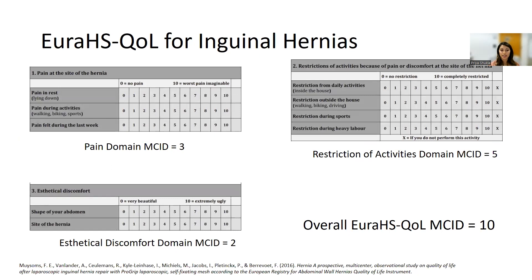Our MCID was three for the pain domain out of a total of 30. For the restriction of activities domain, our MCID was five out of a total of 40. For the esthetical discomfort domain, our MCID was two out of a total of 20. This yielded an overall or composite URIHS quality of life MCID of 10.